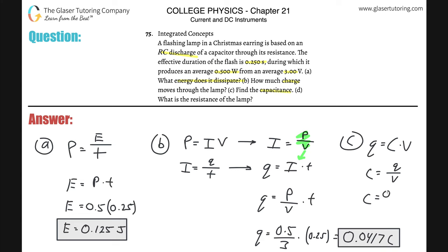You found the charge just prior, and then you divide it by the voltage of 3. So the capacitance here is going to be 0.0417 divided by 3.